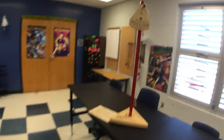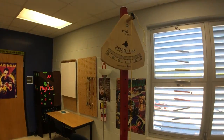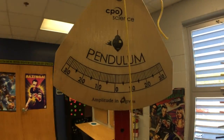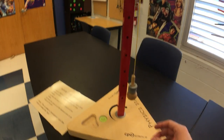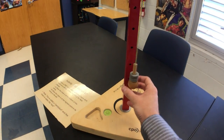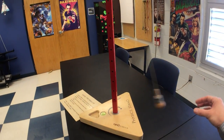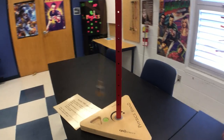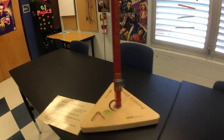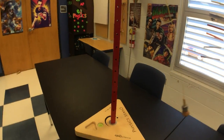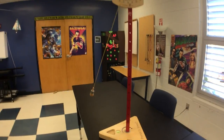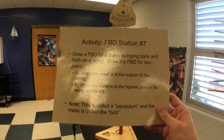Let's check out this station. Here we have a pendulum and this is a pendulum bob. Let it do what it does — swinging back and forth in what we call simple harmonic motion.